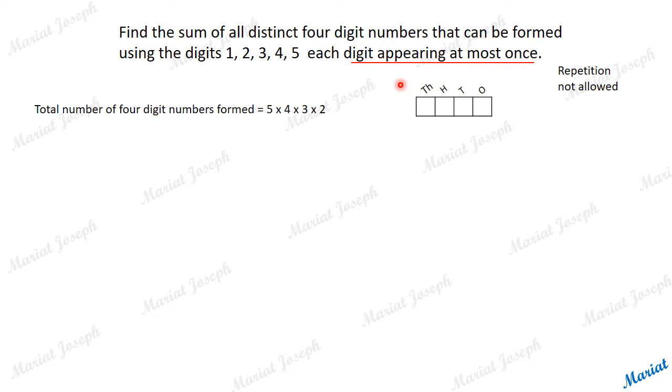Now, how many numbers can be formed according to this condition? Total number of four-digit numbers that can be formed will be 5 × 4 × 3 × 2, because the first place can be filled by any of the five digits in 5 ways, then 4 ways, 3 ways, and 2 ways, as repetition is not allowed. So the total number of numbers will be 120.